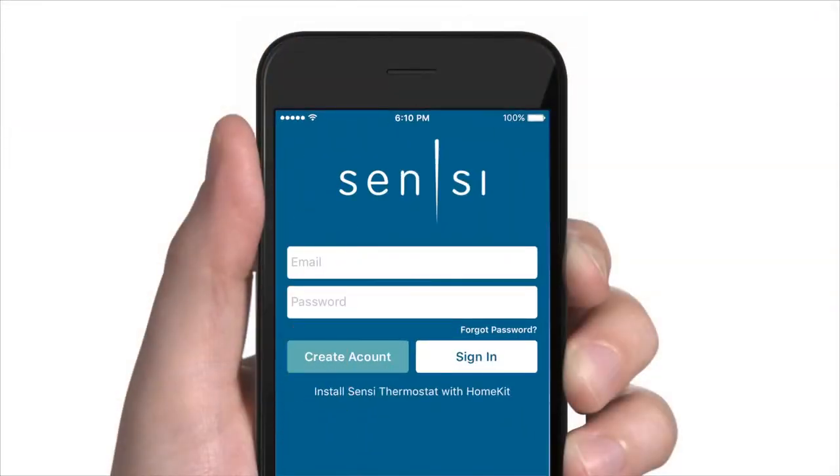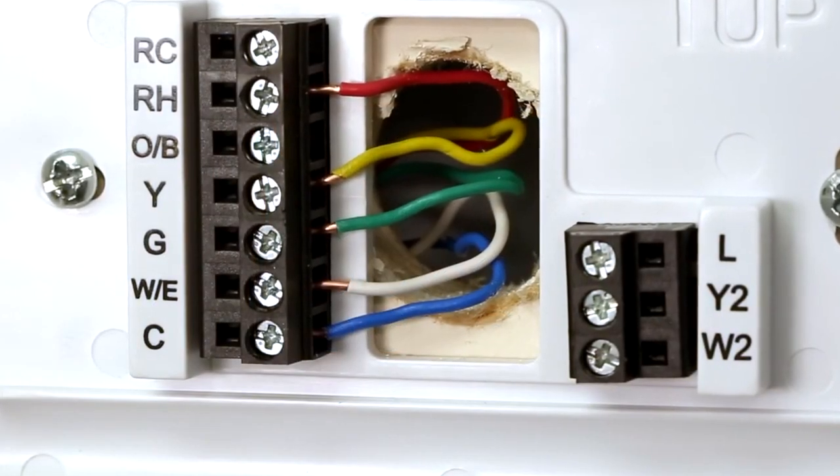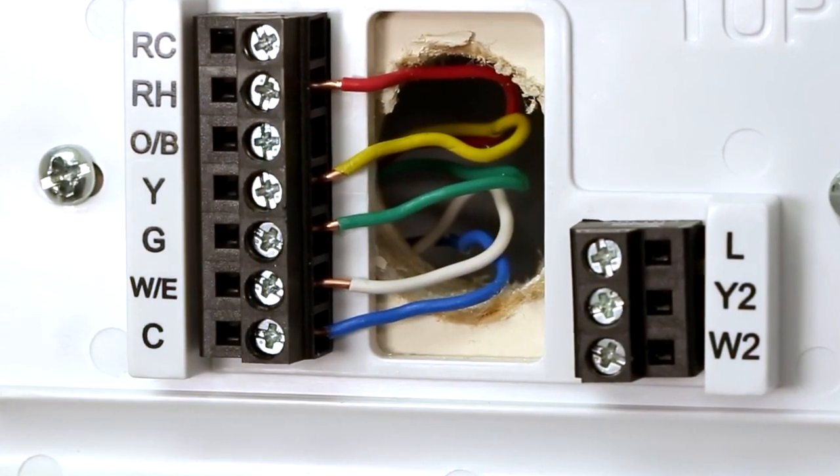Now that you have a functioning C wire, you can use the Sensi mobile app to complete your installation. Once back in the Sensi mobile app, when selecting what terminals have wires attached, you can now select C to reflect the new C wire you just added. Congratulations on getting one step closer to having your Sensi thermostat up and running.